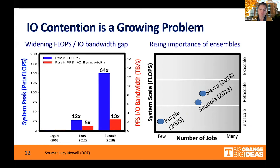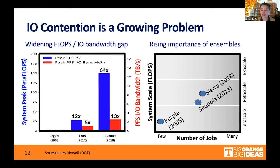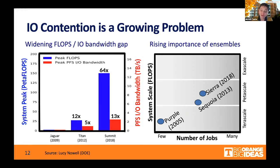The other trend we sometimes ignore is that our simulations — the way scientists use our supercomputers — are becoming more and more ensembles of jobs. Here you see a snapshot of the types of jobs executed in specific years on Purple, Sequoia, and Sierra — three generations of supercomputers at Lawrence Livermore. We were counting the number of jobs that individual users submit within a week, and we were seeing that users submit more and more independent jobs that are part of a bigger simulation, which means more contention is just around the corner.